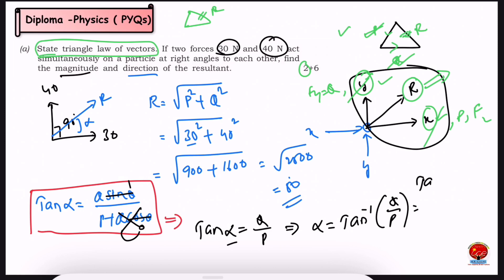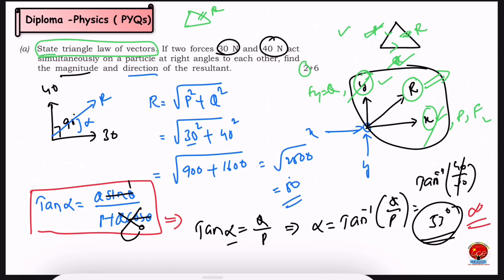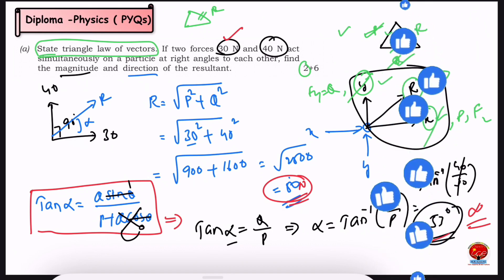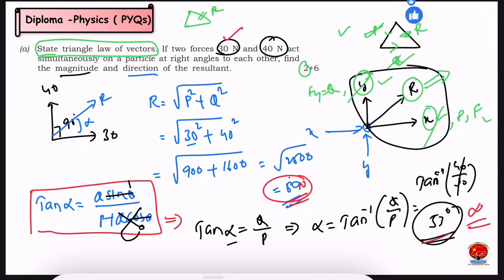Substituting Q equal to 40 and P equal to 30, we get 40 divided by 30, which is approximately 1.33. Taking tan inverse gives us alpha equal to 53 degrees. This is the direction. The resultant magnitude is 50 N, and the direction is 53 degrees.